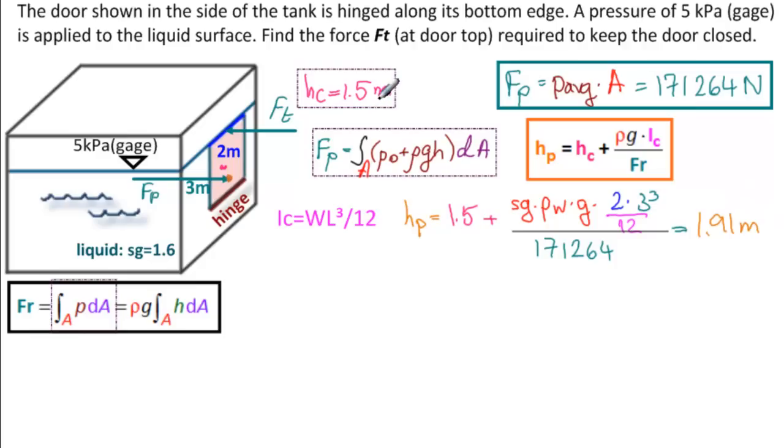So when we calculate all of this using our calculator, we get 1.91 meters. Makes sense. It's bigger than 1.5. So we've gone down to 1.5 to Hc, and then down to 1.91 to Hp.